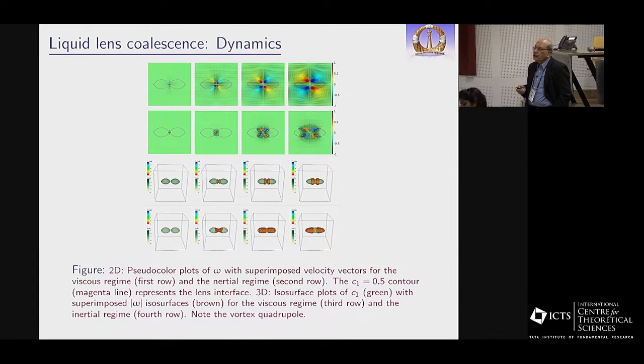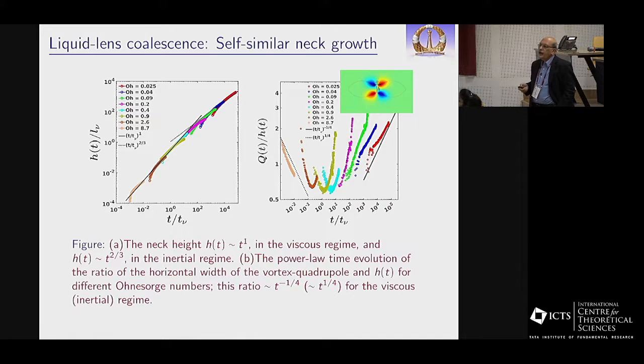This is the 2D picture. You can see how the height of this lens merger opens up. This is in the viscous regime; you see a quadrupole of vortices which is not easily available unless you do the full Cahn-Hilliard Navier-Stokes. Then in the inertial regime where you get big Reynolds numbers, so it is turbulent, you see this quadrupole separating. Nice pictures in 3D but essentially the same story.